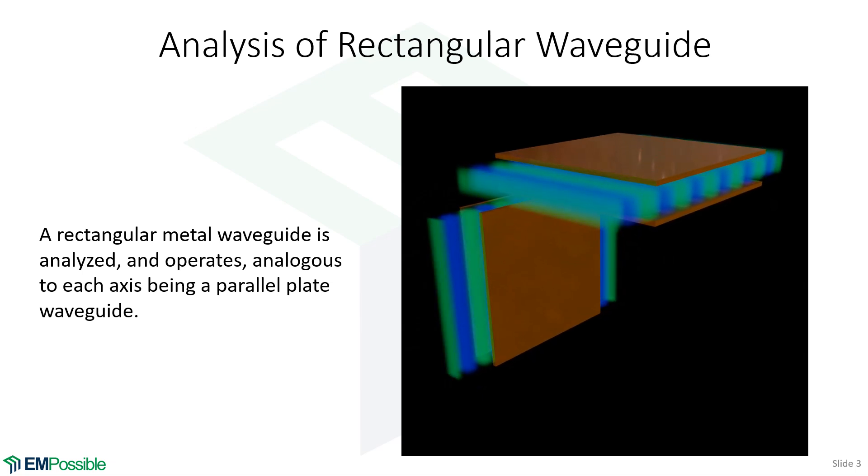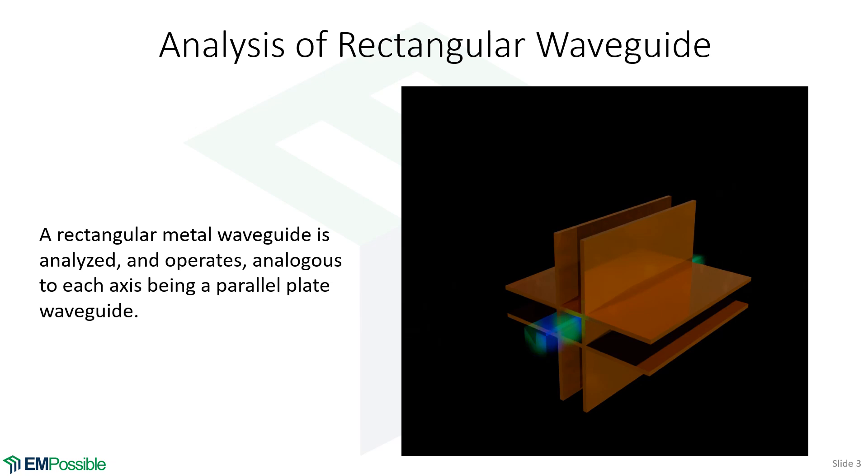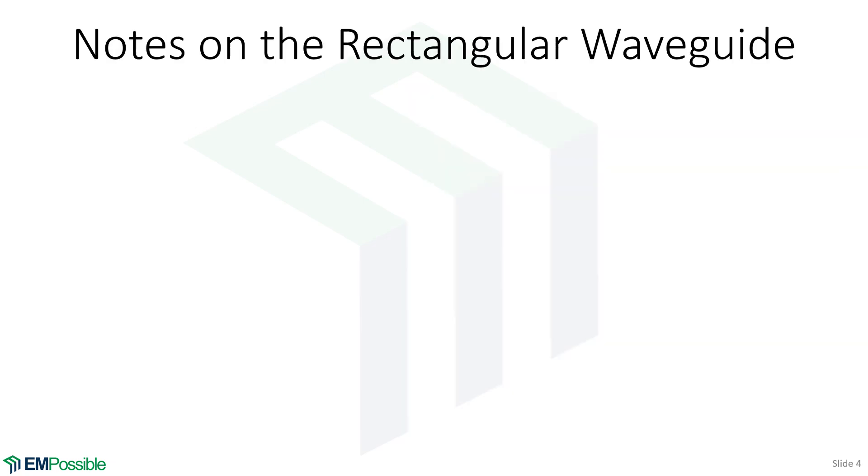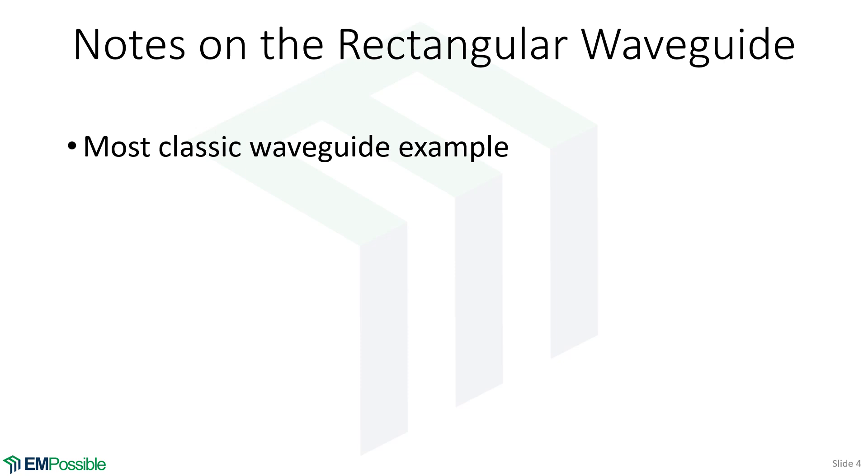It's a great waveguide to analyze right after analyzing parallel plate waveguides. Almost all the concepts we discussed in parallel plates will arise again. Before we jump into the analysis, let's go through some notes. It is probably the most classic example of a channel waveguide because it's very simple to analyze. Practically, it was one of the first waveguides used for microwave frequencies. Transmission lines above five to ten gigahertz, depending what you're doing, become very lossy. Waveguides are the preferred way to pipe electromagnetic energy. Even at lower frequencies and at very high power, waveguides will be preferred.